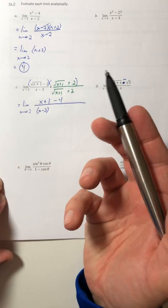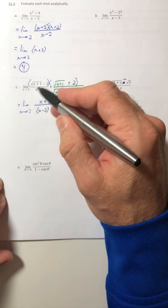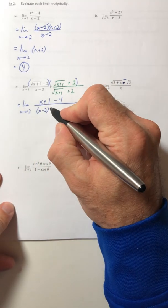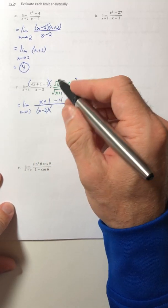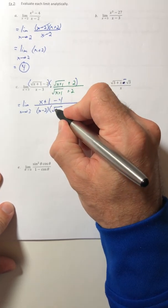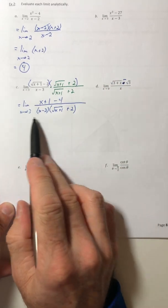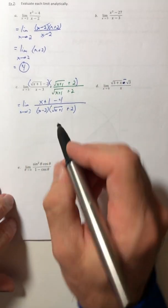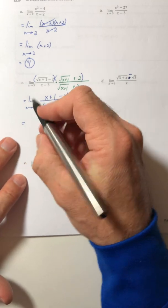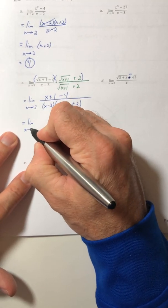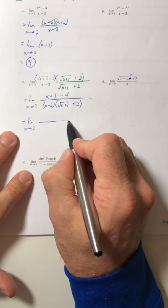Because you want this X minus three to cancel out, because once it's gone, you should be able to plug the three in for X. So if I foil this out, I'm going to lose my X minus three factor. And I would just have to factor it back out. So a lot of times in calculus, you don't foil denominators, you just leave them.